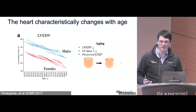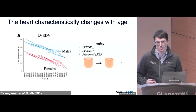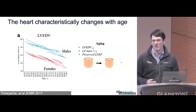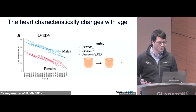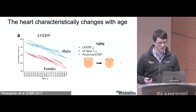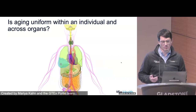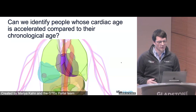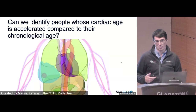One thing that ties all of that work together is that we can always see an association between cardiac structure and function and age. This is something people have noticed for a long time. A prominent example is from MESA, looking at left ventricular end diastolic volume, which is smaller in older people — not just cross-sectionally, but also within individuals over time. This age relationship with cardiac structure prompts the question: is aging uniform within a person and across their organs, or could we identify people whose cardiac age is accelerated or decelerated relative to their chronological age?